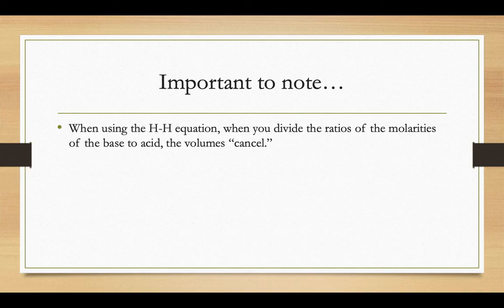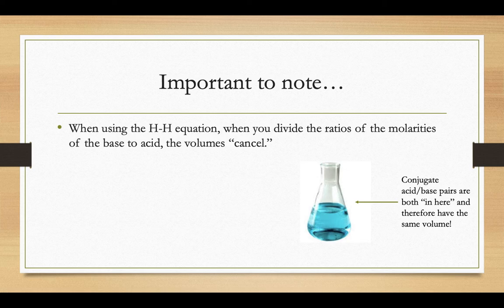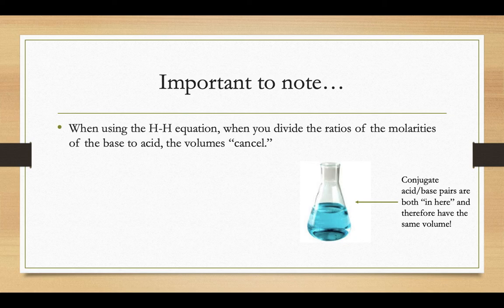One important thing to note when you're using the Henderson-Hasselbalch equation: when you divide the ratios of those molarities of the base to the acid, the volumes cancel. It's kind of hard to picture when you're looking at the equation on paper, but if you think about the actual chemical itself, both the conjugate acid and its base, they're both in the same flask. They're both in there simultaneously, so they have the same volume.